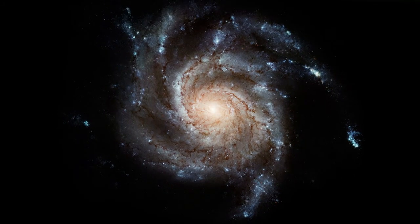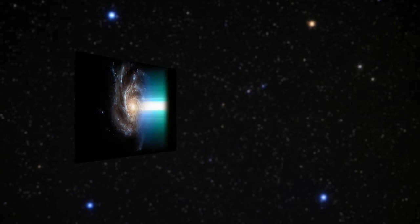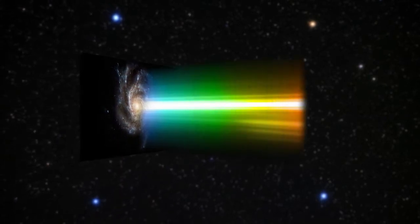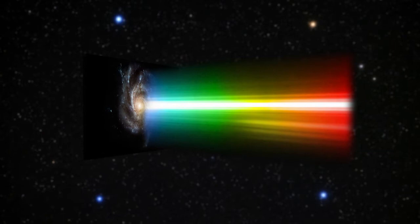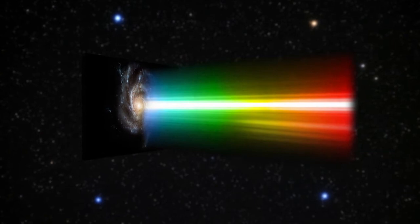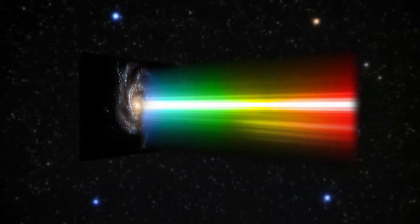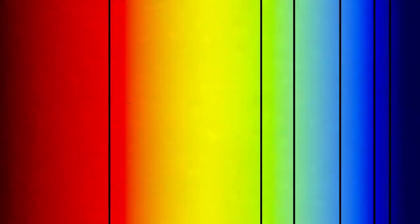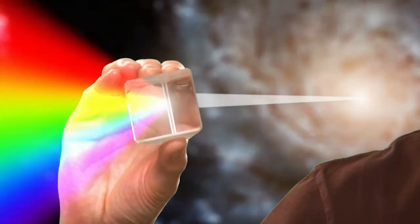Once the light enters the spectrograph, it is split by a dispersive optical element into its different components or wavelengths in order to be studied. This element acts much like rain droplets that disperse the light to form a rainbow. This dispersed light is then focused onto a detector and it is seen as a spectrum.